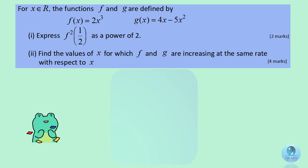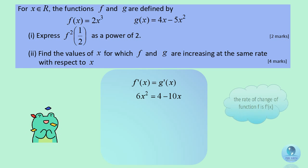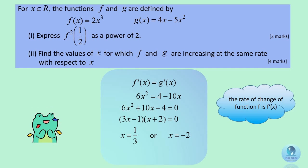When f and g are increasing at the same rate, it means f prime of x equals g prime of x. By using differentiation, we get the derivatives for both functions: 6x squared equals 4 minus 10x. Hence, we get x equals 1 over 3 or x equals negative 2.